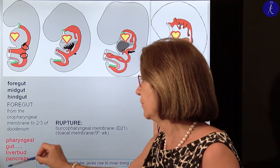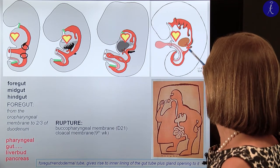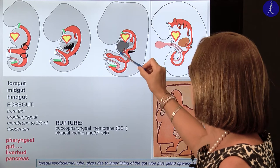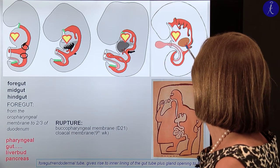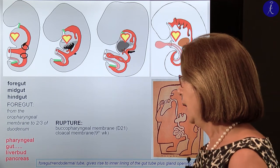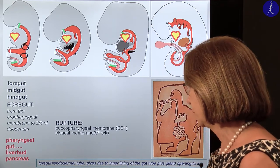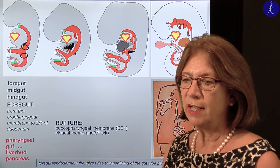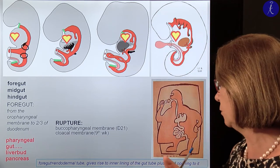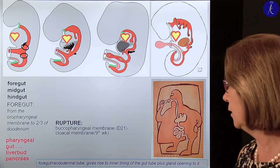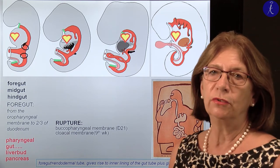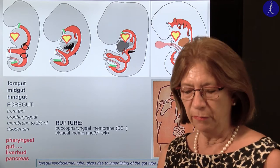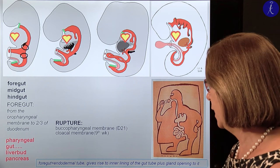Here you see the derivatives. Before the foregut ends at two-thirds of the duodenum, it will have outgrowths giving the liver, gallbladder, and pancreas — all also given by the endoderm of the foregut. The foregut itself is only an endodermal tube. The endoderm gives rise only to the inner epithelial lining of the gut and the glands which open into it. All connective tissue, muscle elements, and blood vessels come from the visceral layer of the lateral plate mesoderm.